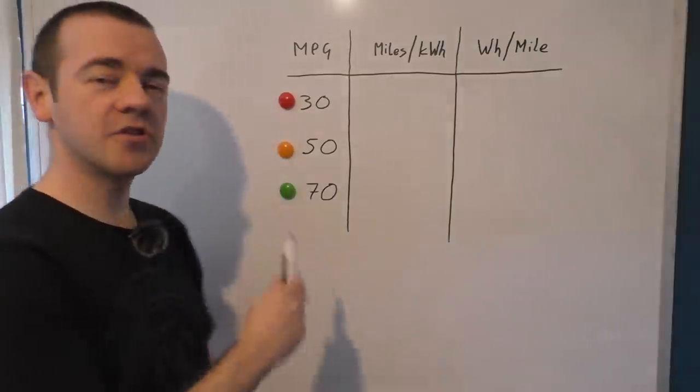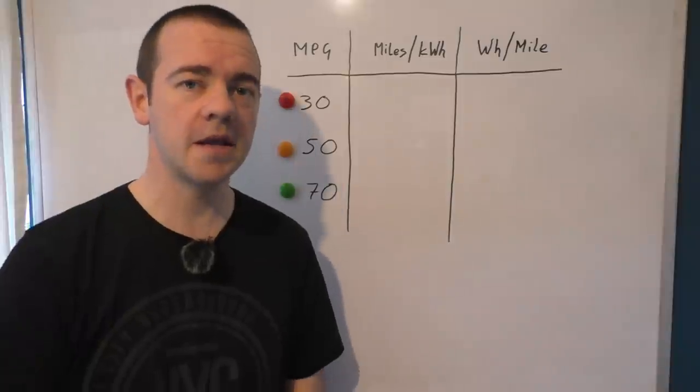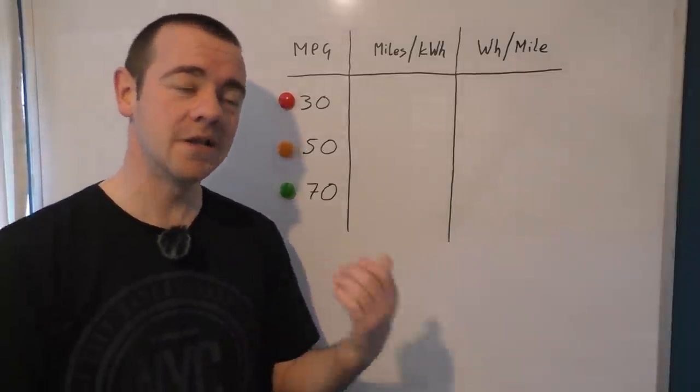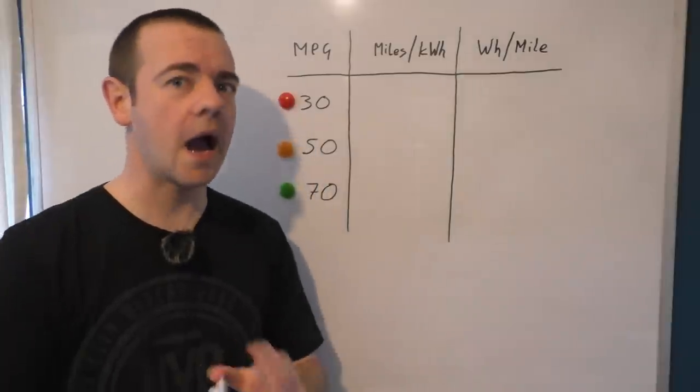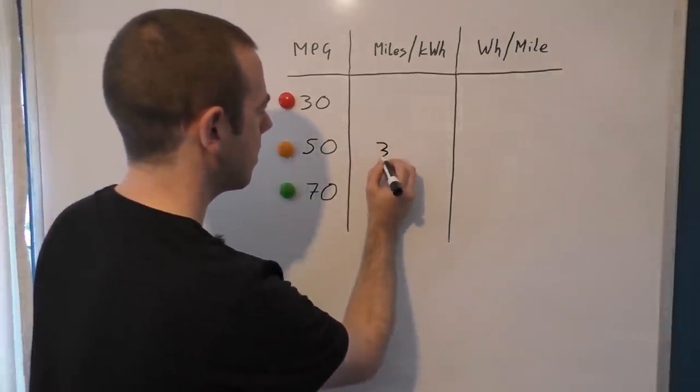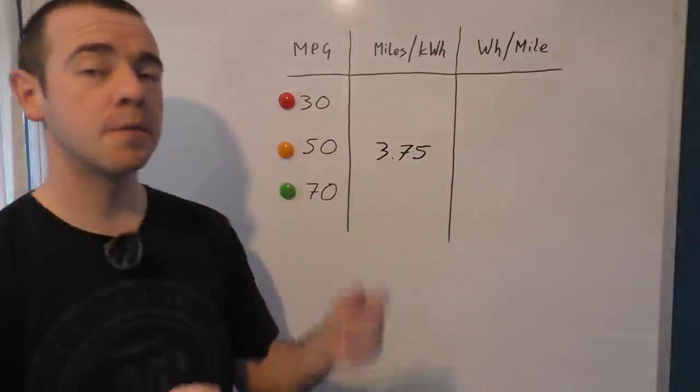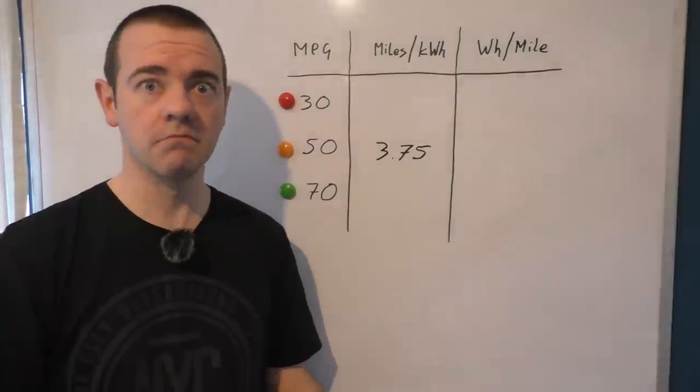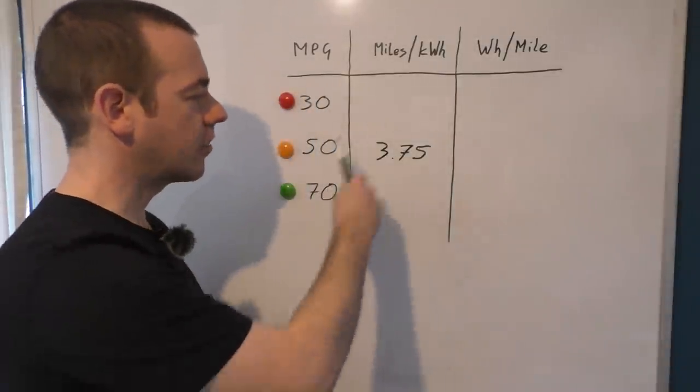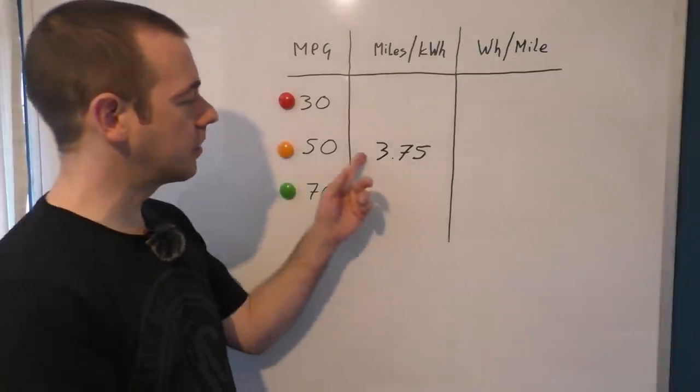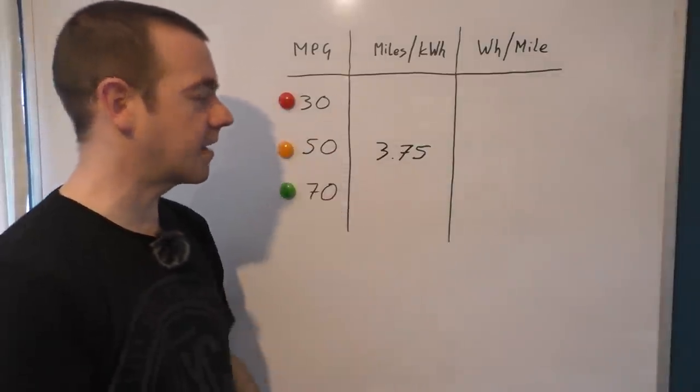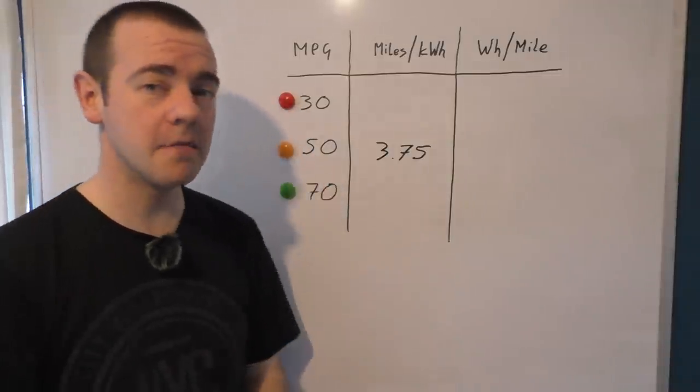So in miles per kilowatt hour, there's no real studies on this one. So I've had to use effectively five and a bit years of my own experience and of course speaking to many other people that I know with EVs. So I've decided because it does change, winter is less than summer, how you drive obviously has the biggest effect. So what I've decided to go for is, for average, 3.75 miles per kilowatt hour. I would say that is the average for the average electric vehicle. Some of course will be more than that, some will be lower than that, that is the whole point of an average.